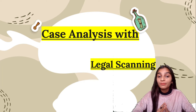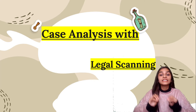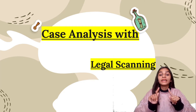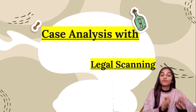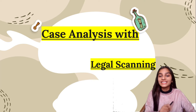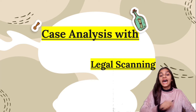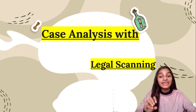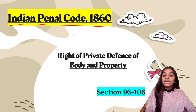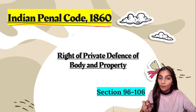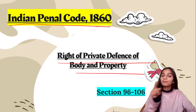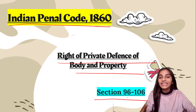Today we will study a very important case of English law. In the last video, I had told you about an important Indian law case which was the right of private defense of body and property under the Indian Penal Code 1860. If you want to know which case, you can see my previous video. The right of private defense of body and property falls under sections 96 to 106.